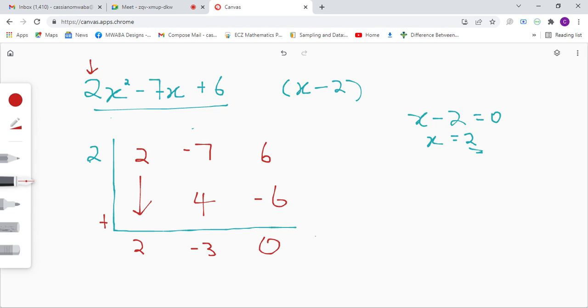So when we multiply 2x minus 3 with x minus 2, we're supposed to get this trinomial here.